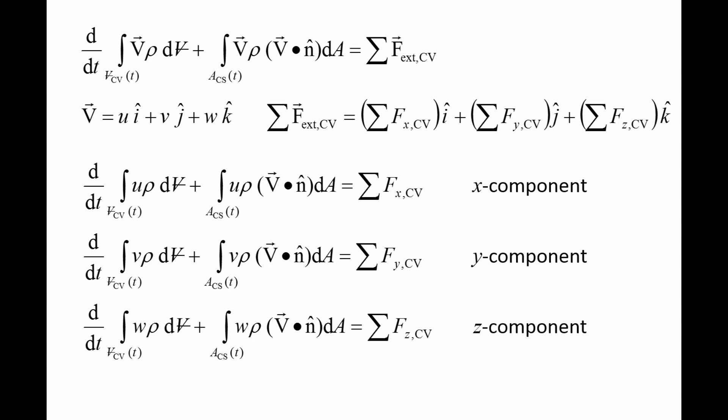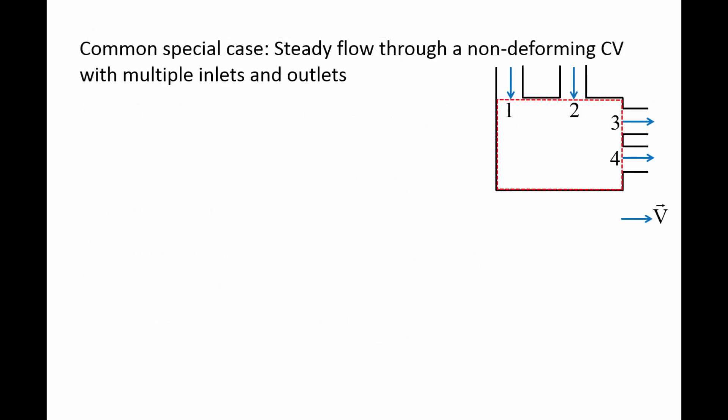In their current form, the conservation of momentum equations can be difficult to utilize. We will now examine a common situation which will greatly simplify these equations. Here we have fluid flowing steadily through a generic device which has multiple inlets and outlets and does not deform. The device is surrounded by a control surface marked by red dashed lines, and the control volume is contained inside. The direction of flow is indicated by blue velocity vectors. The inlets are labeled 1 and 2, while the outlets are labeled 3 and 4. The direction of the normal vectors are shown in orange and point outward from the control surface.